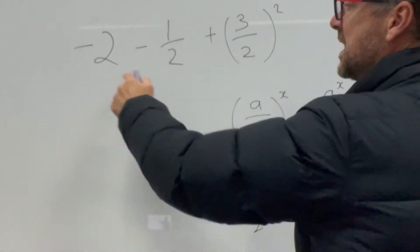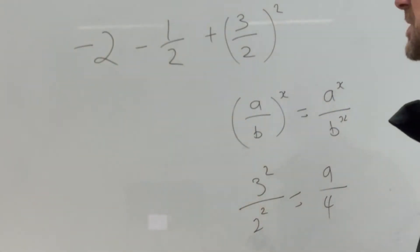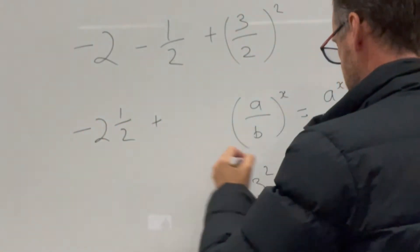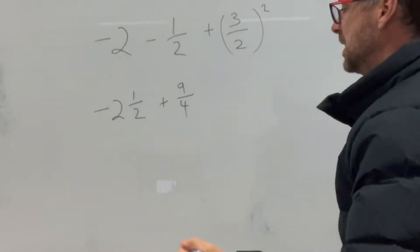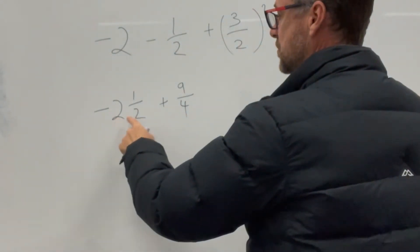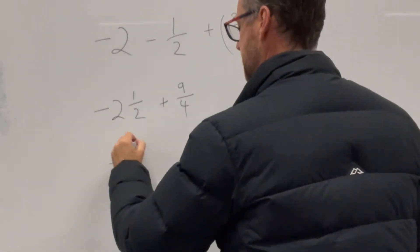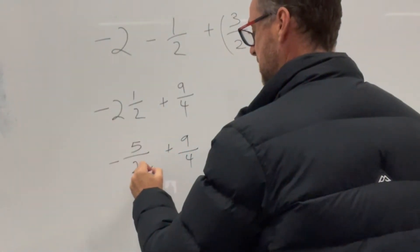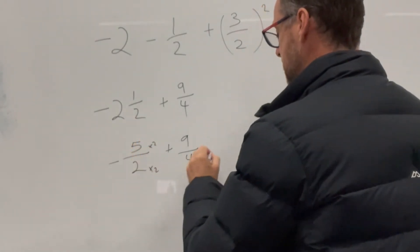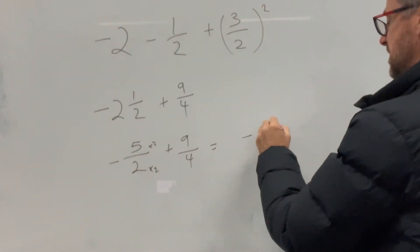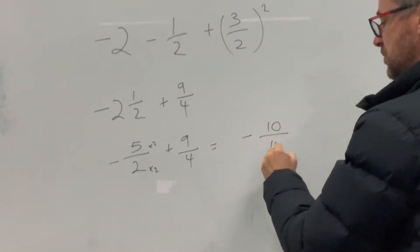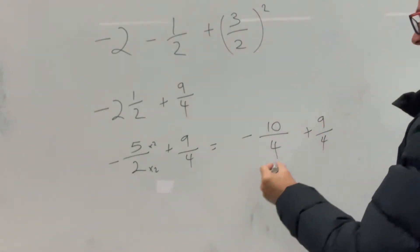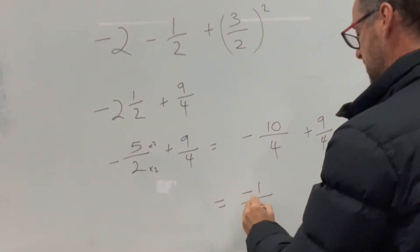So we've got negative 2 take away a half, which becomes negative 2 and a half. We need to add 9 over 4 to that. So 2 and a half is 5 over 2. That gives us negative 5 over 2 plus 9 over 4. We need common denominators, so multiply by 2 over 2 to get negative 10 over 4 plus 9 over 4. Negative 10 plus 9 equals negative 1, giving us negative 1 over 4 — negative 1 quarter.